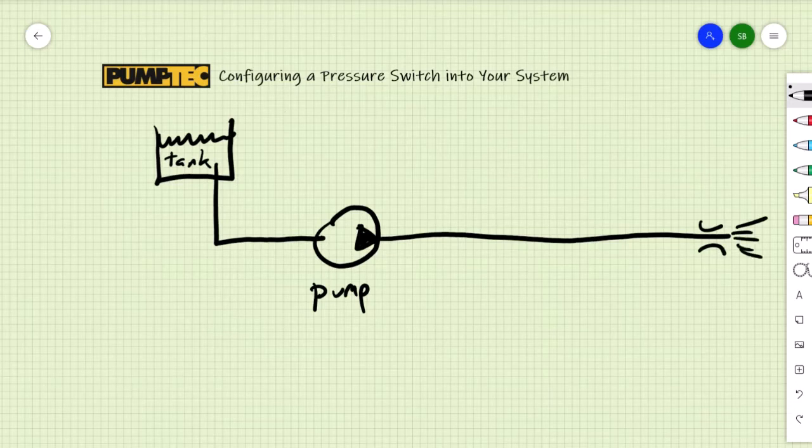The spray nozzle size is very important in a pressure switch system. You have to make sure that when all the flow is going out the spray nozzle, the pressure does not go over the setting on the pressure switch.